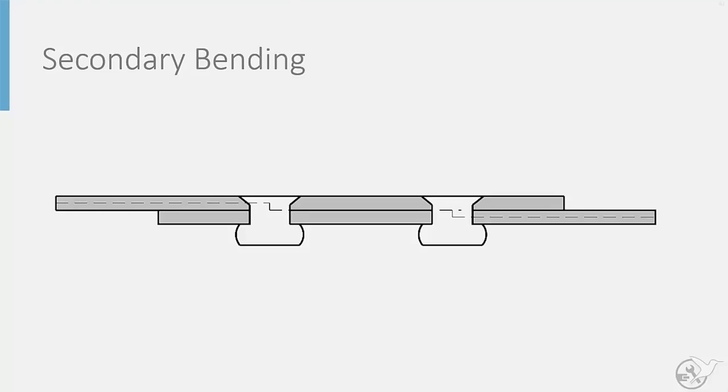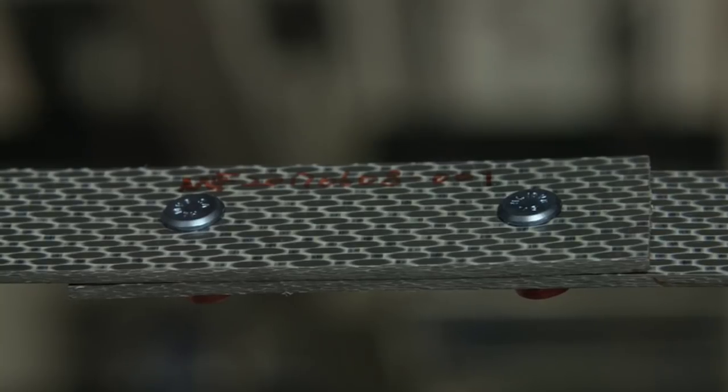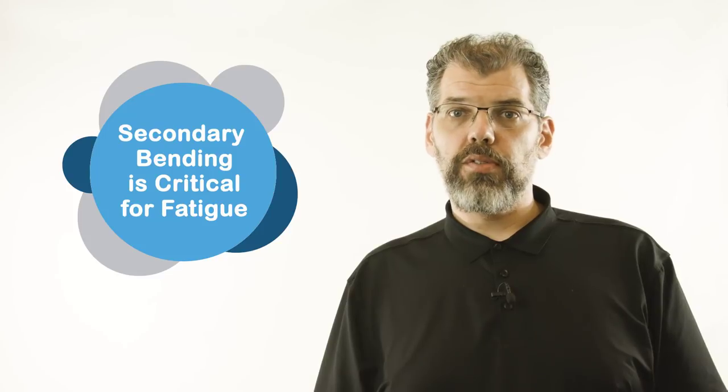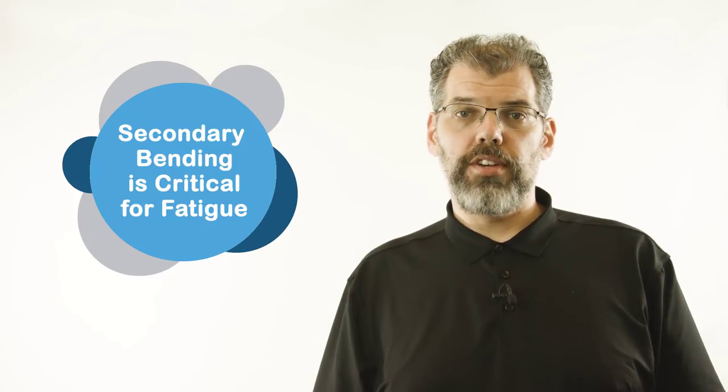Secondary bending is another phenomenon that can generate high stresses. Due to the offset between the joint sheets, bearing loads on each fastener will generate a bending moment that causes rotation and bending of the joint sheets. As we will see later, the added bending stresses due to this phenomenon can be critical for fatigue failure.